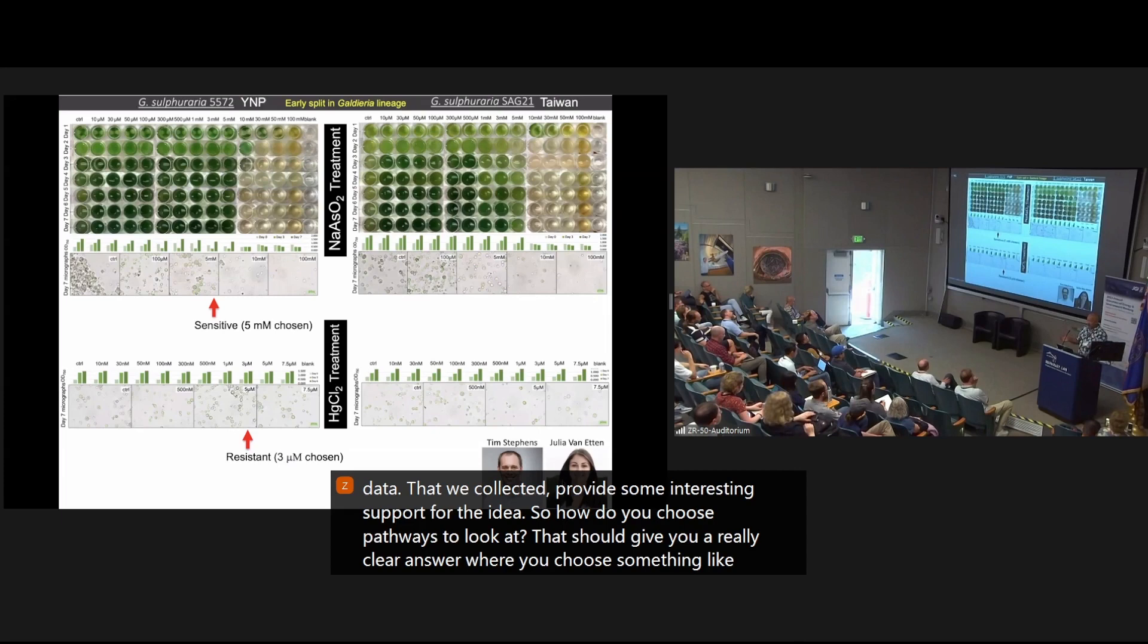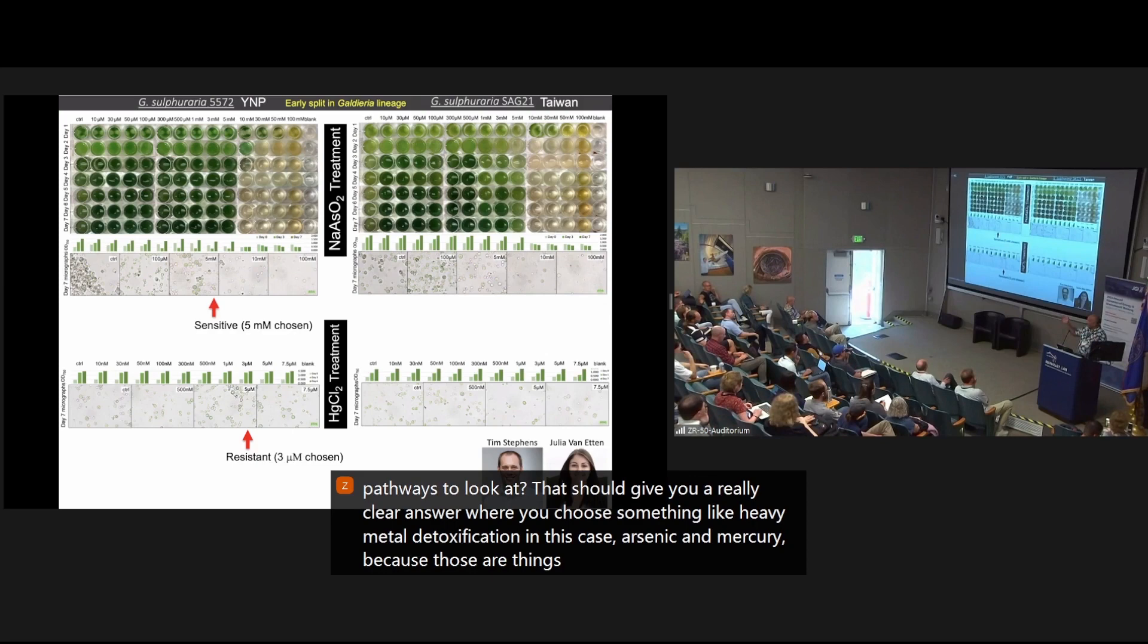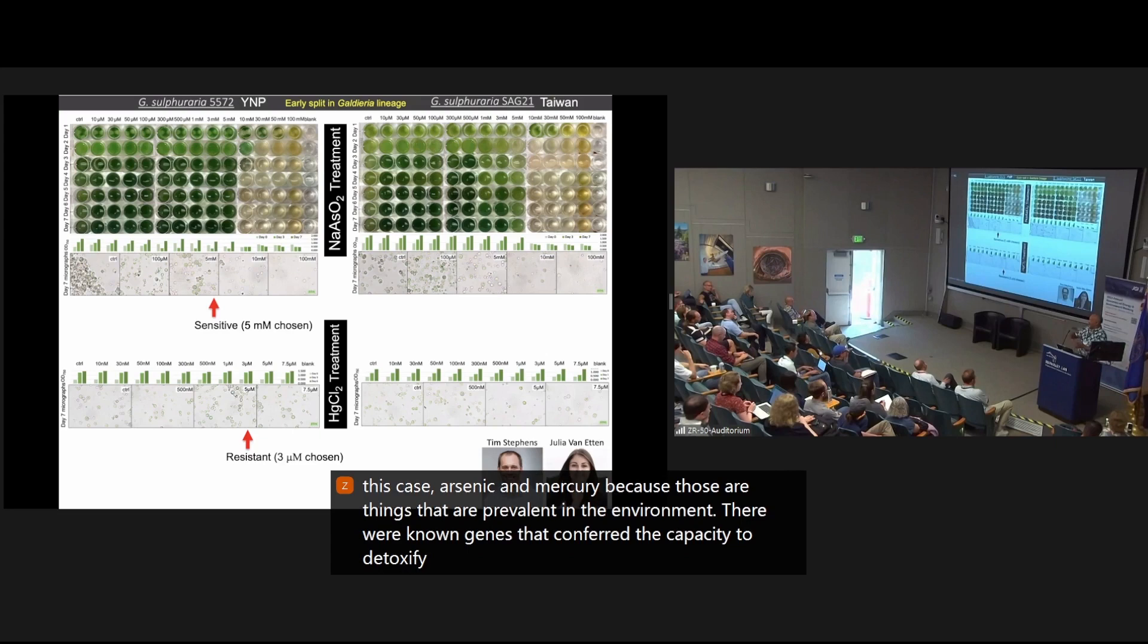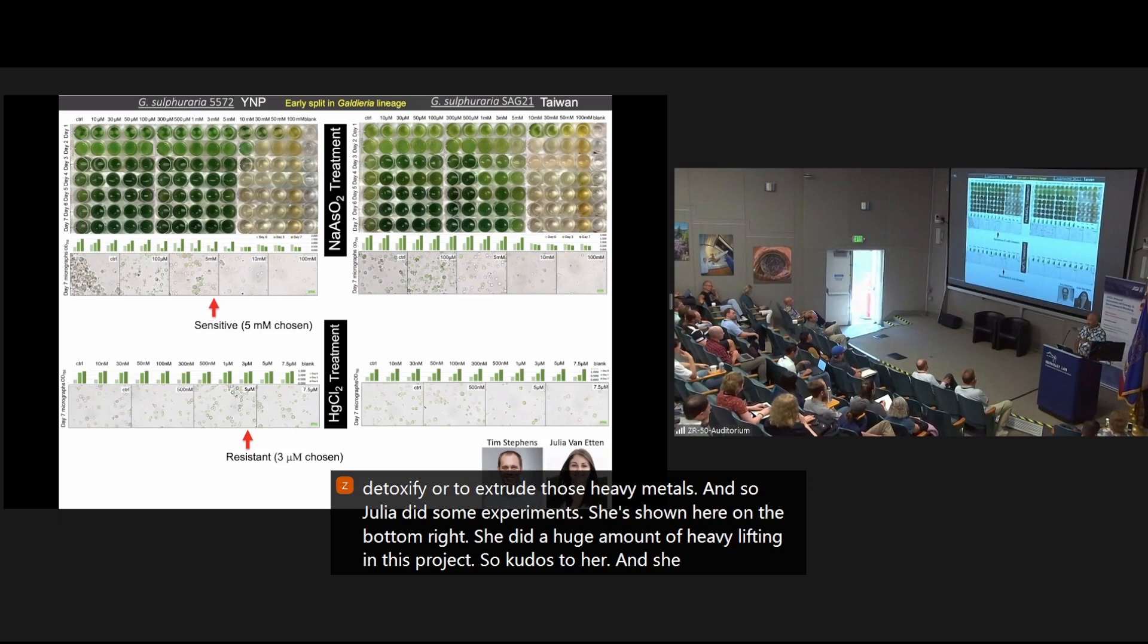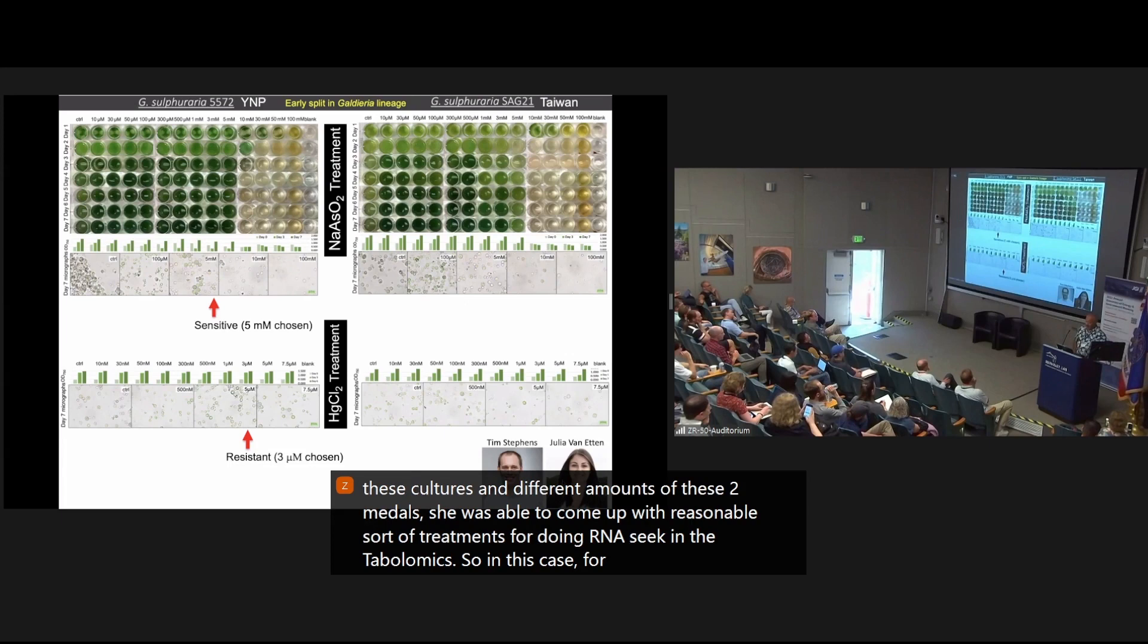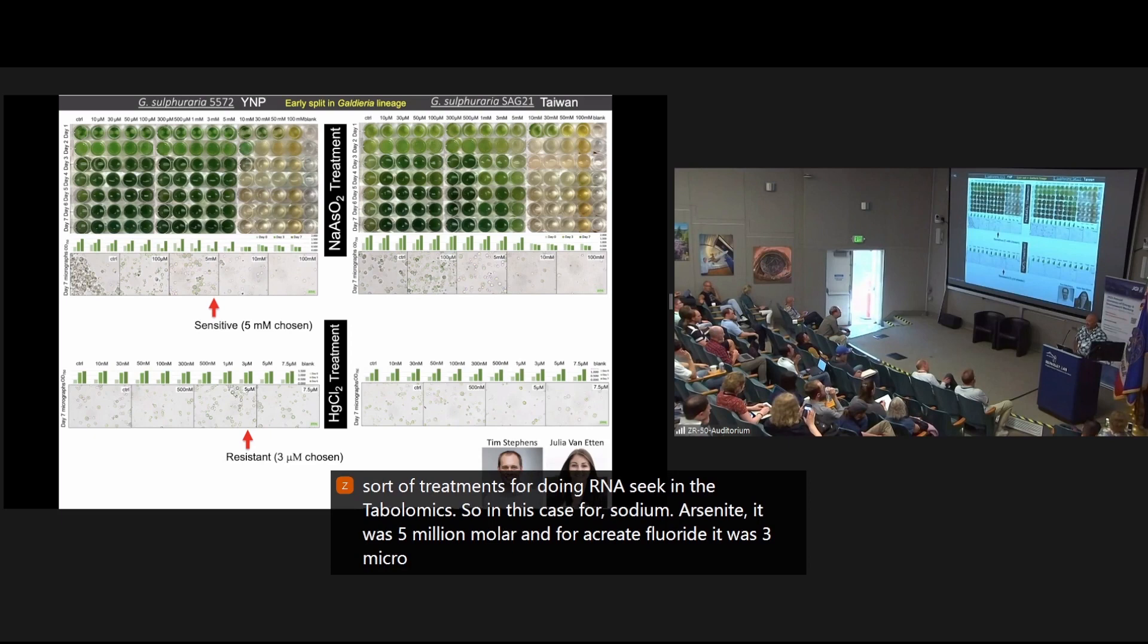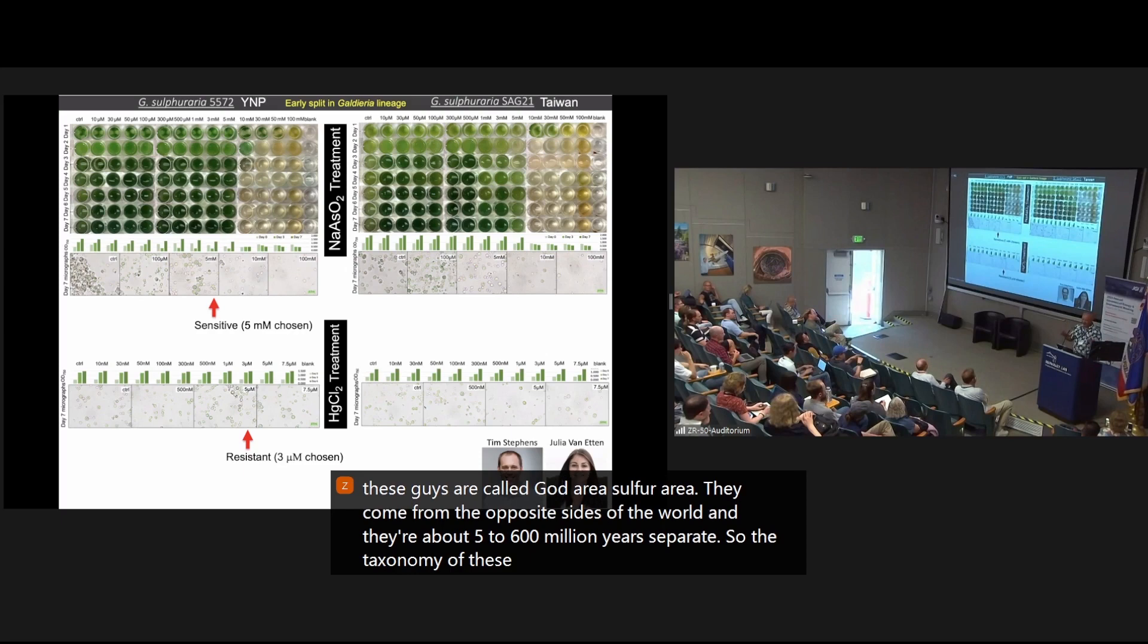So how do you choose pathways to look at that should give you a really clear answer where you choose something like heavy metal detoxification, in this case arsenic and mercury, because those are things that are prevalent in the environment. There are known genes that confer the capacity to detoxify or to extrude those heavy metals. And so Julia did some experiments. She's shown here on the bottom right. She did a huge amount of heavy lifting in this project, so kudos to her. And by growing these cultures in different amounts of these two metals, she was able to come up with reasonable treatments for doing RNA-seq and metabolomics. So in this case, for sodium arsenate, it was 5 millimolar, and for mercury chloride, it was 3 micromolar. The important thing to note here is that these guys are called Galdieria sulfuraria. They come from the opposite sides of the world, and they're about 500 to 600 million years separate. So the taxonomy of these guys is not very clear. Clearly, they're very, very diverged. So they have the same name, but the Yellowstone and the Taiwan strains are actually very different from each other.